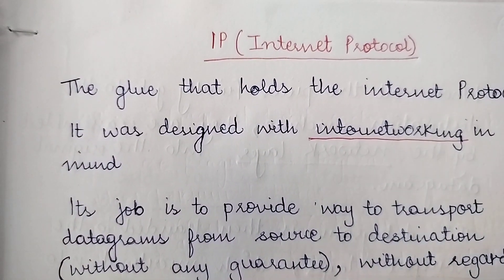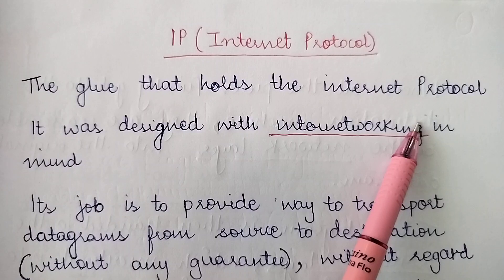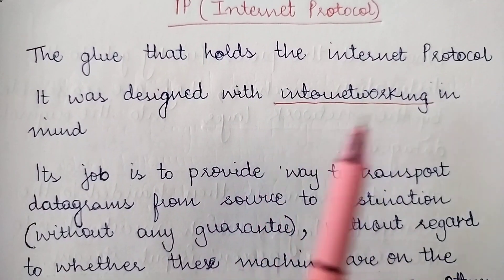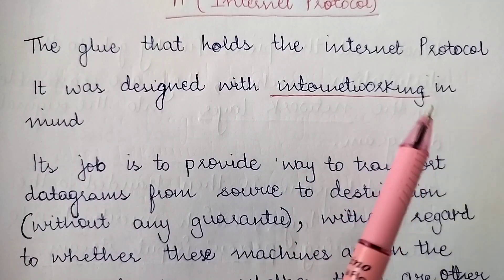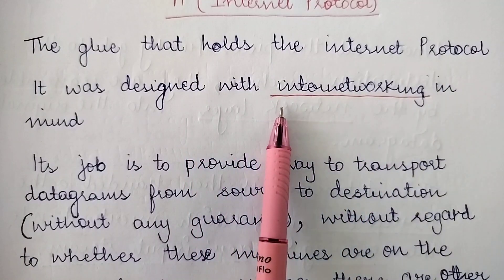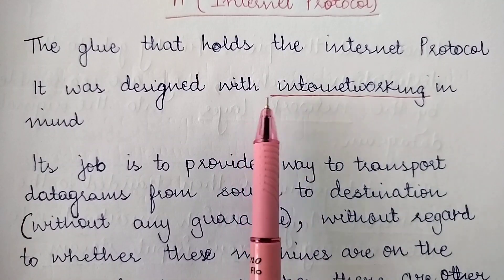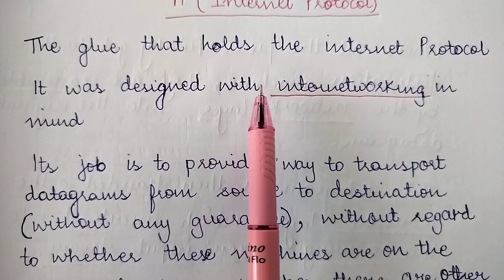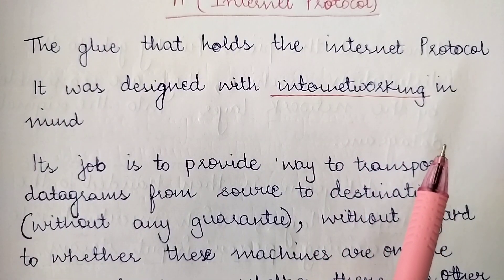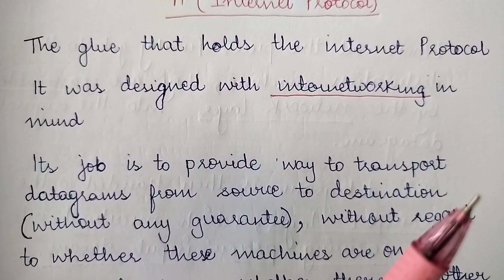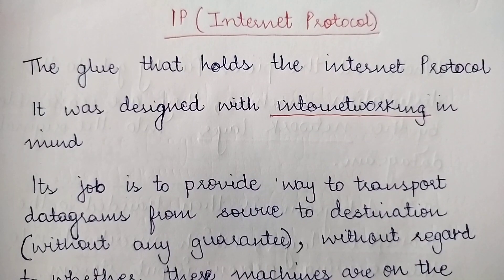The full form of IP is Internet Protocol and you can say that it is the glue that holds the internet together. It was designed with inter-networking in mind — wherein you use different kinds of networks and connect devices using different kinds of networks. Devices on one kind of network can connect with devices on another kind of network. So even if devices are on heterogeneous networks, they should be able to communicate with each other, and for this reason IP was designed.